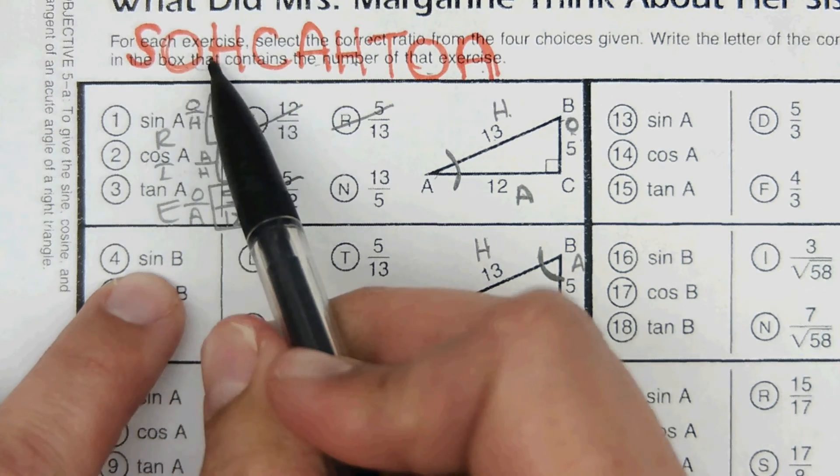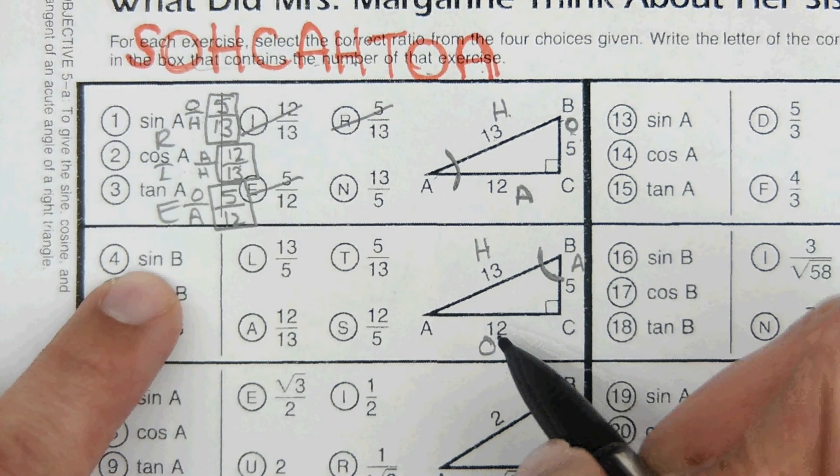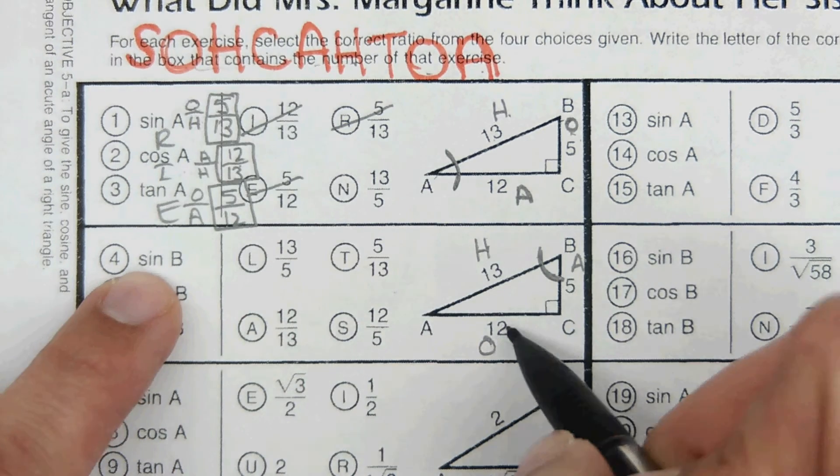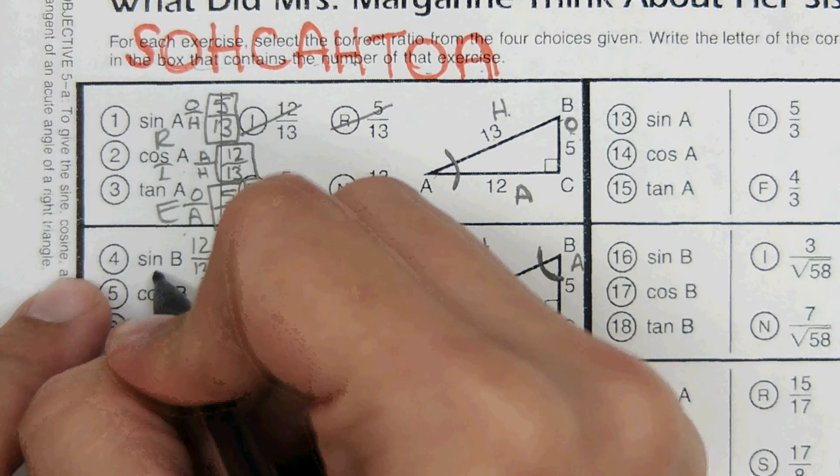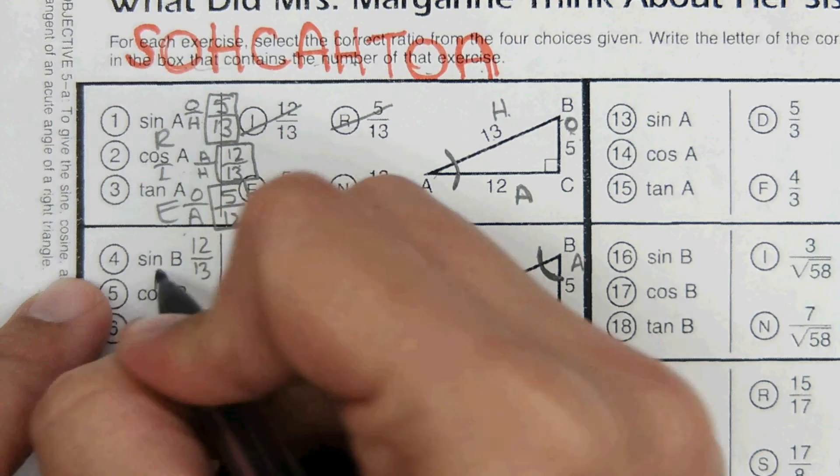And then I look up here, sine is O over H, 12 over 13. So all I'm going to be looking for is for you to write this right here, 12 over 13. And then that's A.